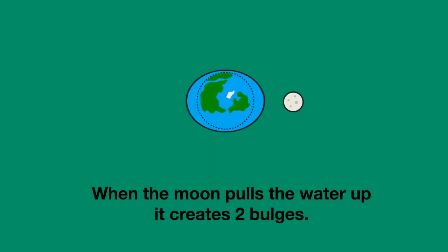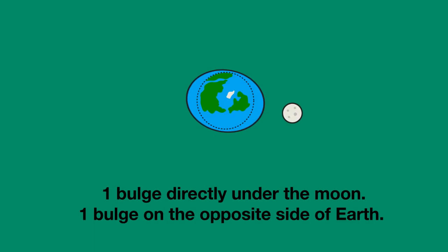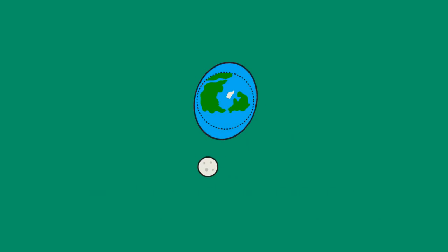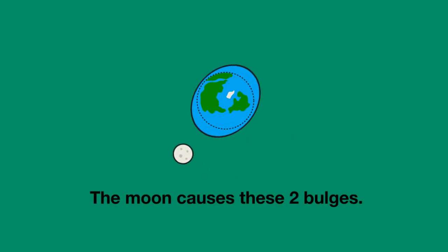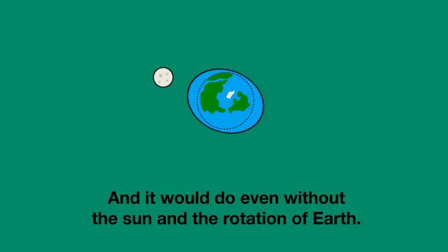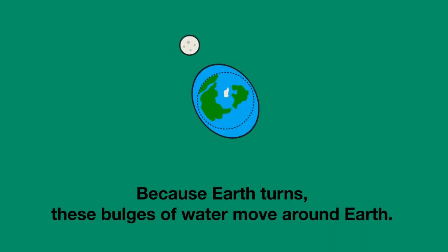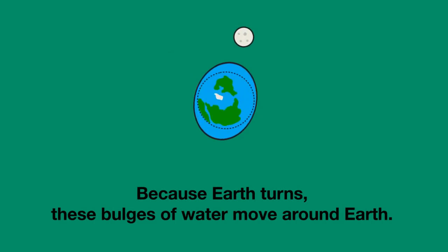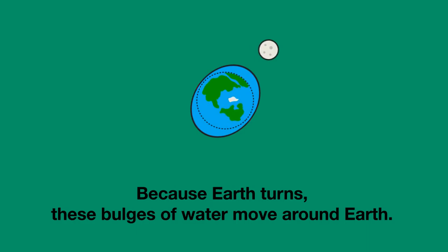When the Moon pulls the water up, it creates two bulges of water: one bulge directly under the Moon and one bulge on exactly the opposite side of Earth. The Moon causes these two bulges and it would do so even without the Sun and even without the rotation of Earth. Because Earth turns, these bulges of water move around Earth, or rather Earth moves underneath them.